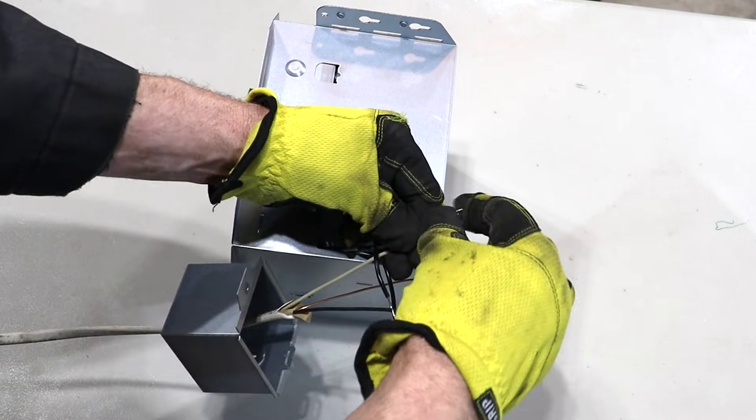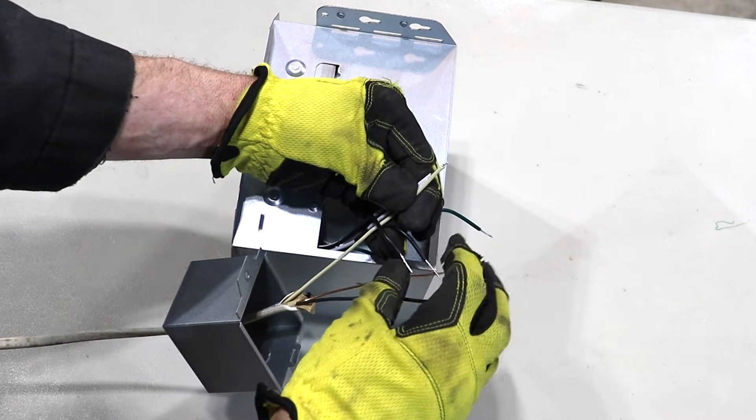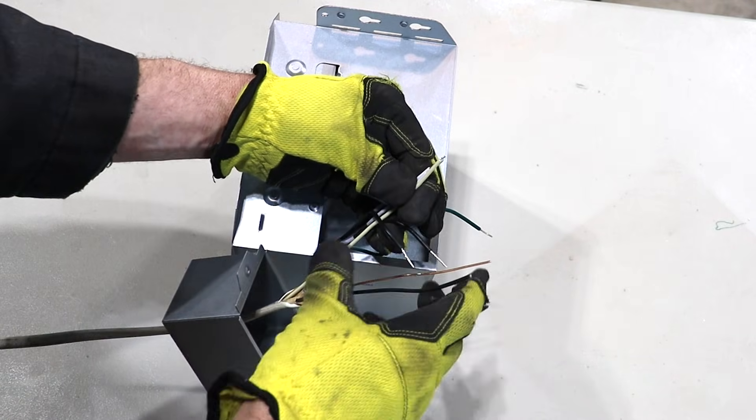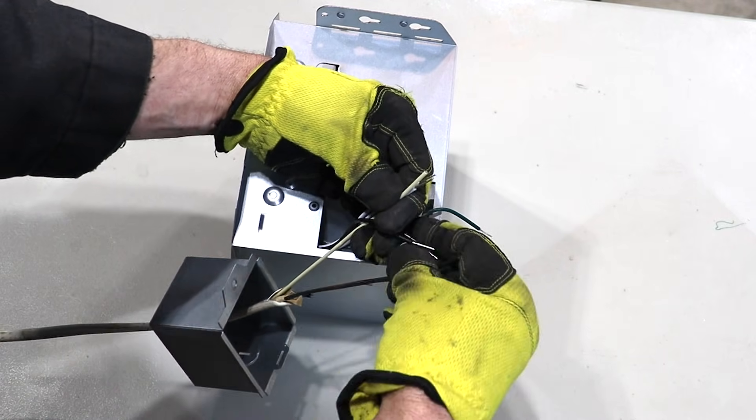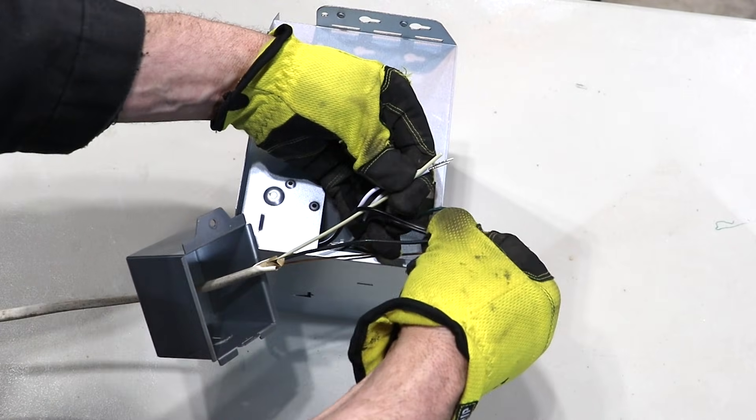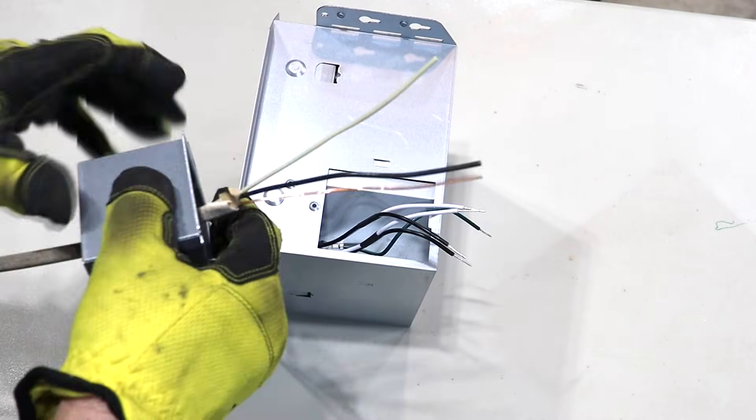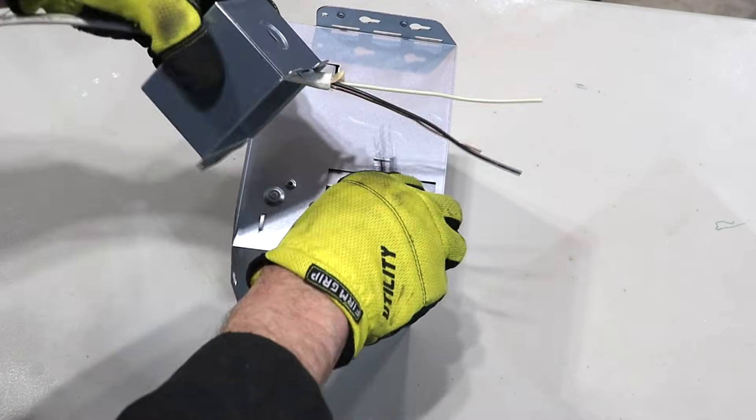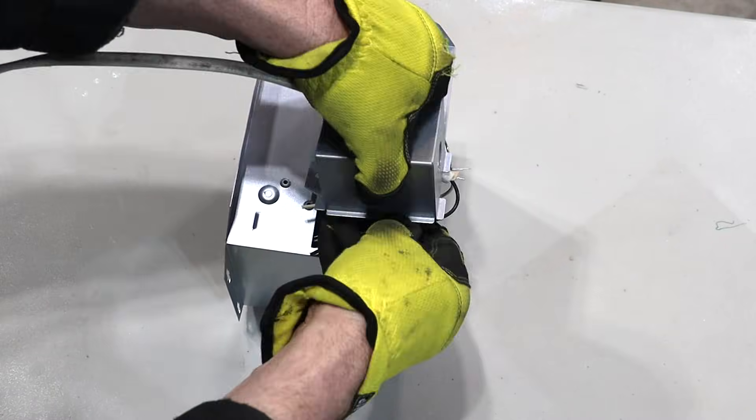So now you can go ahead and wire these up. And since you only have one switch and only one hot wire coming in then these can be wire nutted together. And then once you're done just cram all the wires into the box here.